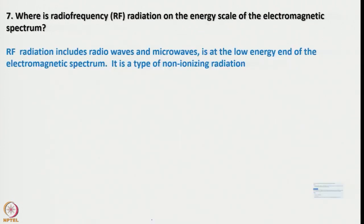Where is radio frequency radiation on the energy scale of the electromagnetic spectrum? Radio frequency radiation — which includes radio waves used in NMR and microwaves used in EPR — is at the low energy end of the electromagnetic spectrum. It is a type of non-ionizing radiation. In the beginning, the electromagnetic spectrum was shown starting from UV to higher energy or lower wavelength to higher wavelength. Try to be familiar with those things so that you know where UV, visible, X-ray, and all those things fall in the electromagnetic radiation spectrum.